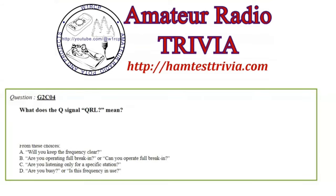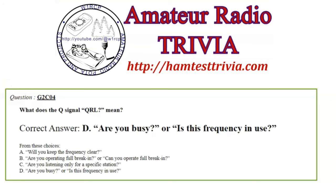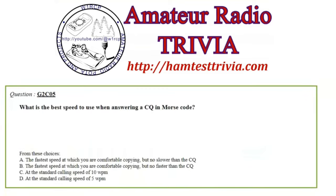Question 4: What does the Q signal QRL? mean? Choices: A) Will you keep the frequency clear / are you operating full break-in, B) Are you listening only for a specific station, C) Are you busy or is this frequency in use? When I do CW, I send QRL after I've listened for a minute. It means 'is this frequency in use?' It can also mean 'are you busy,' but usually it's 'is this frequency in use?' On SSB, you just say, 'hey, is this frequency in use?'